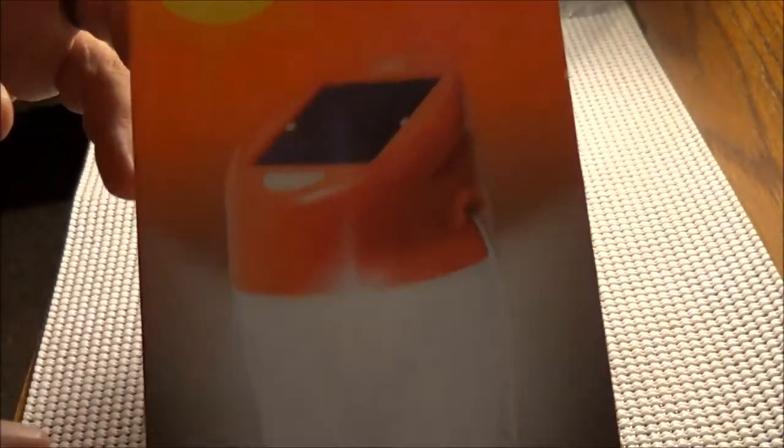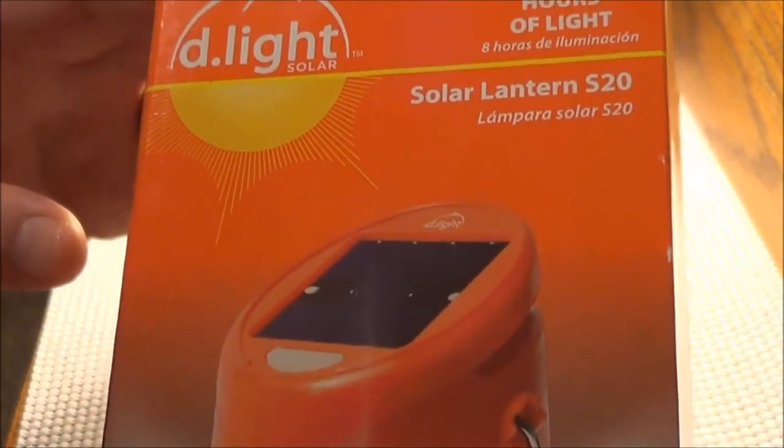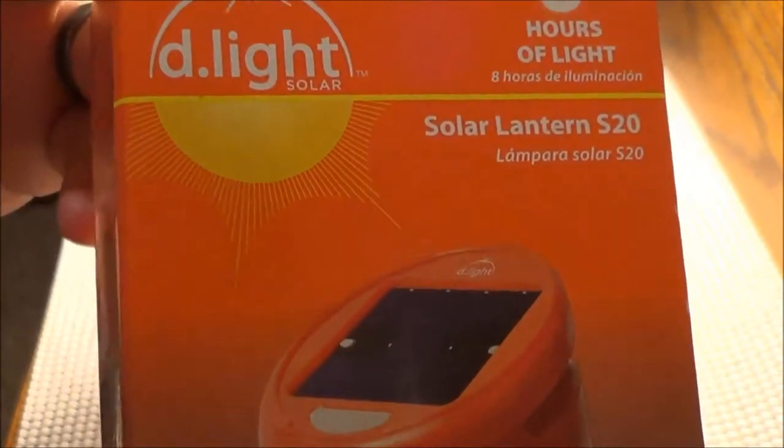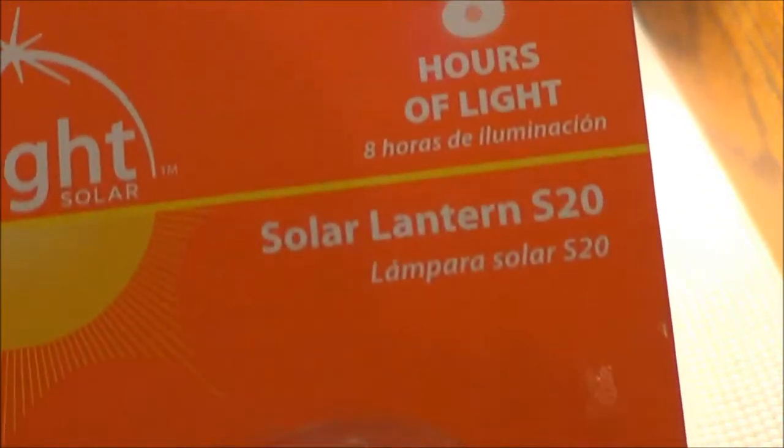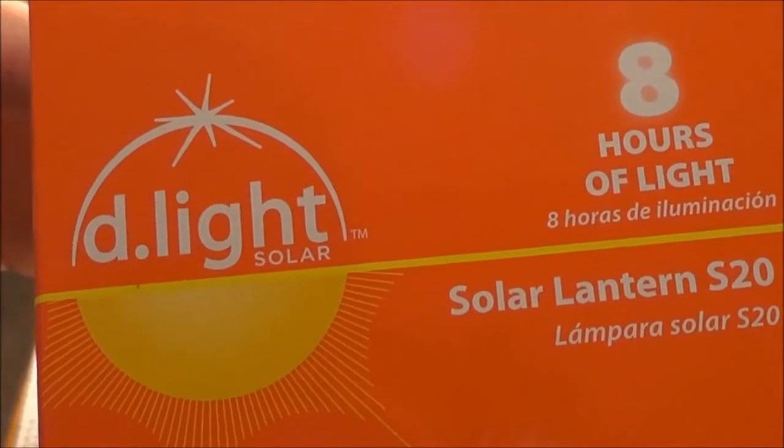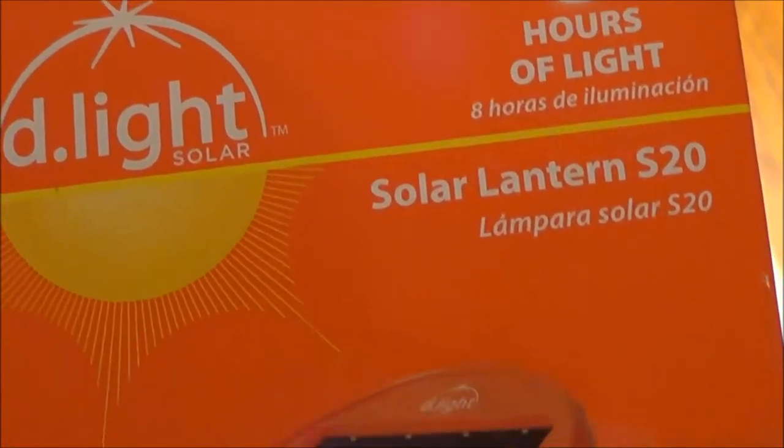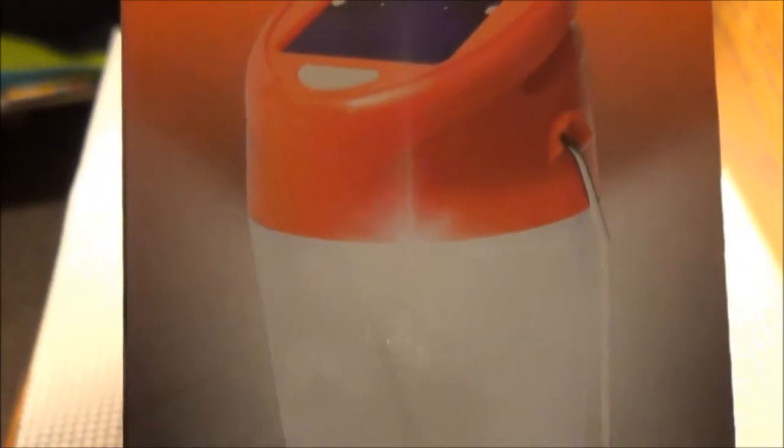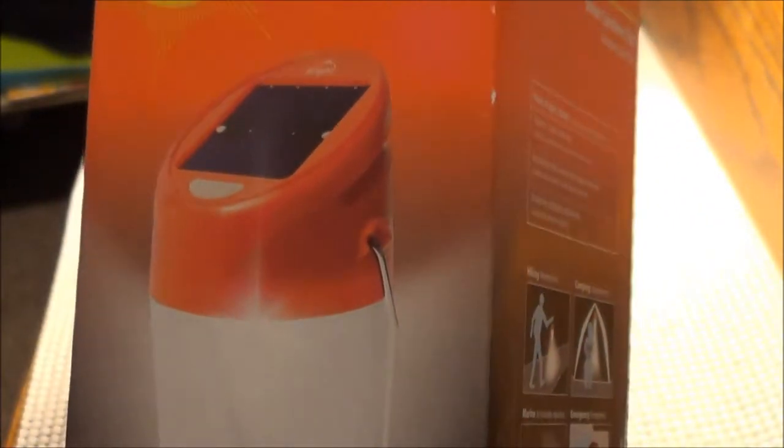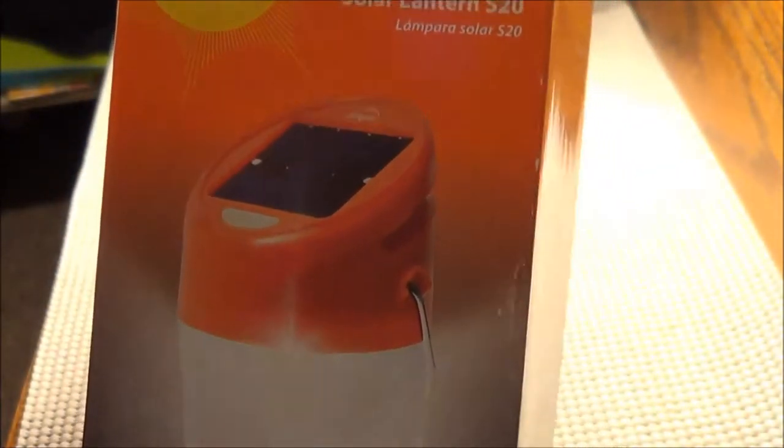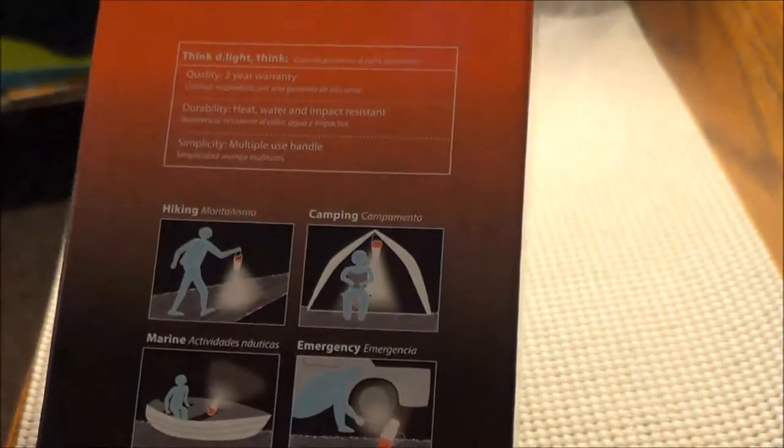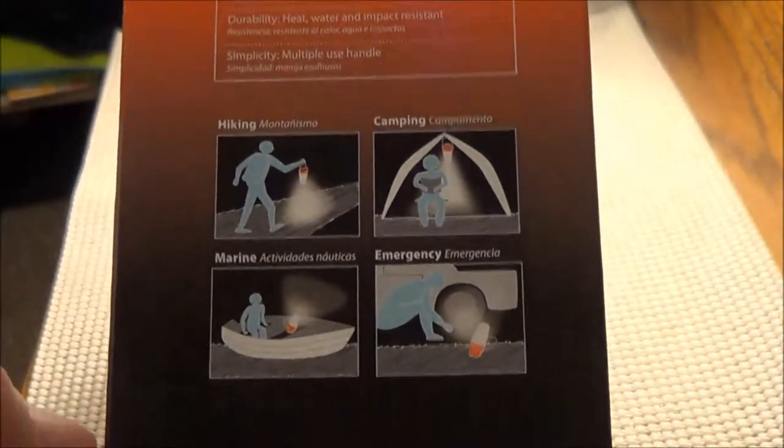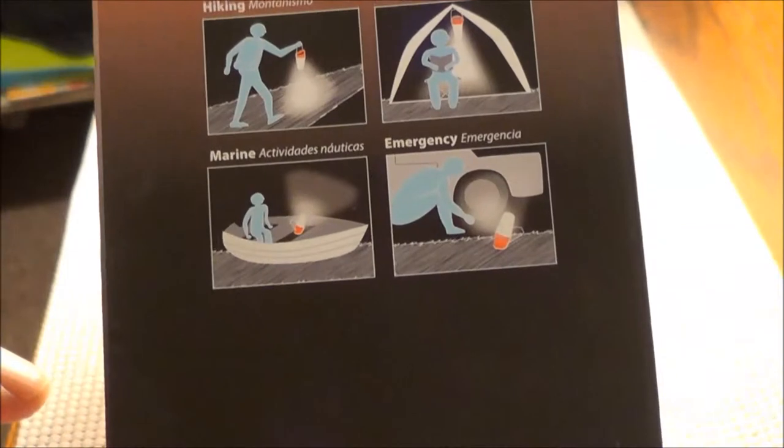This is a D.light model S20 and it is a solar light. This is the picture of the light and it's a solar light, no batteries required, and it gives you eight hours of light on low and four hours of light on high and it's a pretty bright little light.